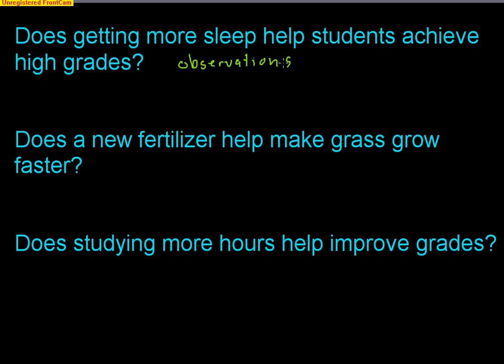Does a new fertilizer help make grass grow faster? This would be a great idea for an experiment, because you could literally get some plots of land, split them up evenly, give grass seed on all the land, then give half the land the new fertilizer and leave the other half with just grass seed. You could water all the land and give all the land the same shade and sunlight, and at the end say: wow, that half of the land grew more because it had the fertilizer. You could actually impose fertilizer onto grass.